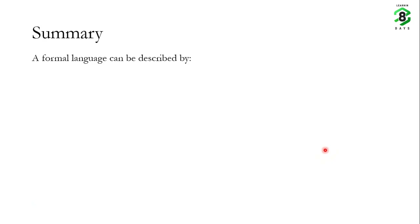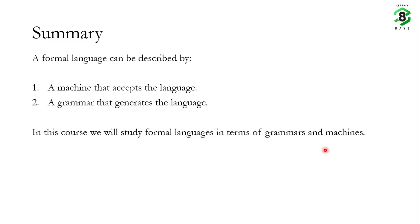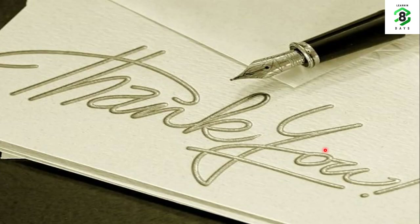To summarize, a formal language can be described in two ways: one, a machine that accepts the language, or two, a grammar that generates the language. In this course, we will study formal languages in terms of both grammars and machines. In the next class, we will talk about the Chomsky hierarchy of grammars. Thank you.